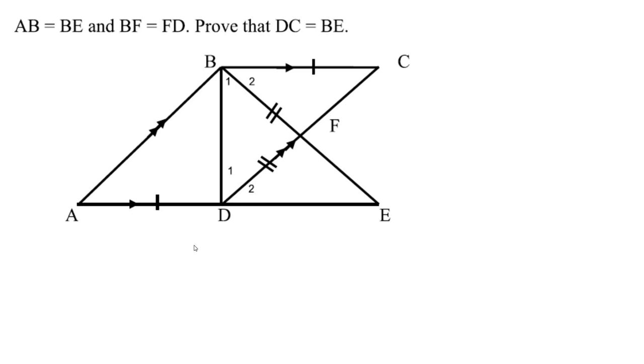So AB is equal to BE. It's given. But AB is equal to DC. And why is that? Because we've got another parallelogram here. It's the opposite sides of a parallelogram.